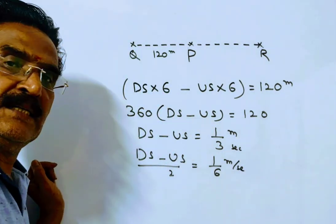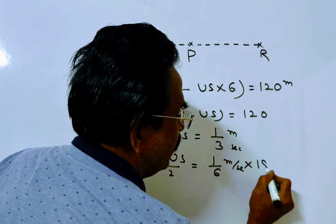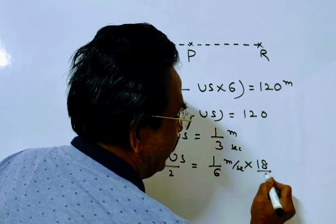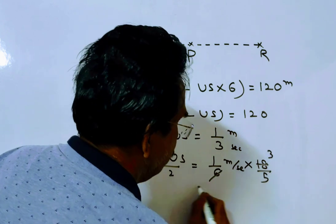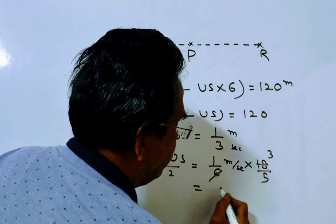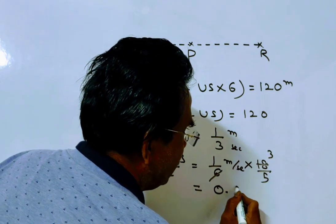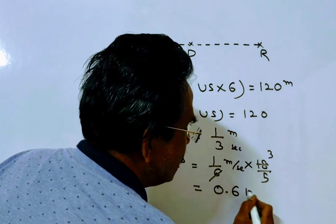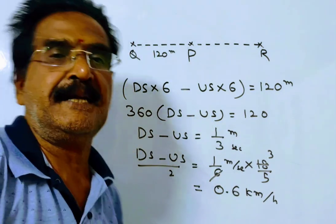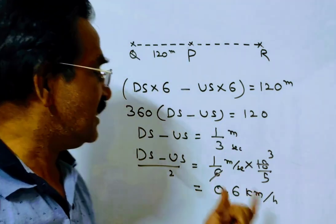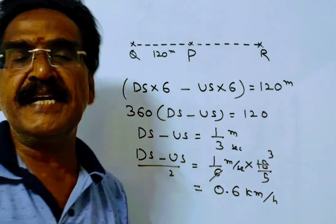But we want the answer in kmph. So let us multiply by 18/5. 1/6 into 18/5 gives 3/5, which equals 0.6 kmph. This is the velocity of the stream.